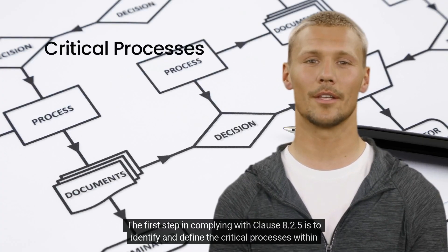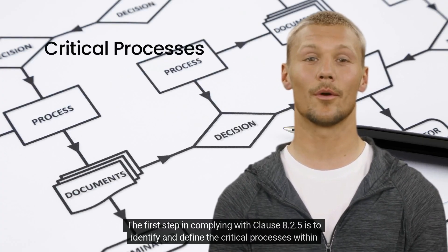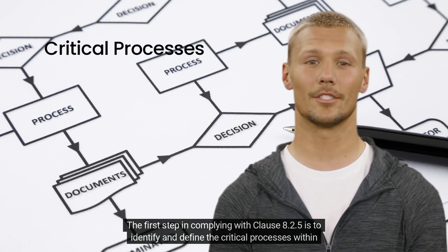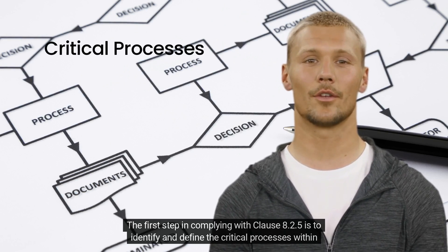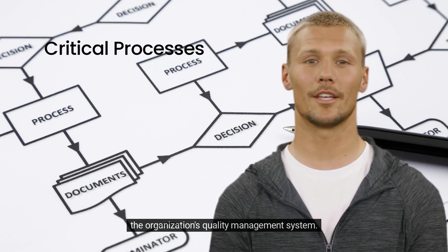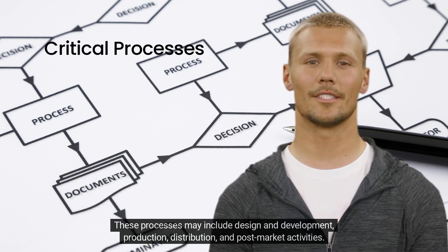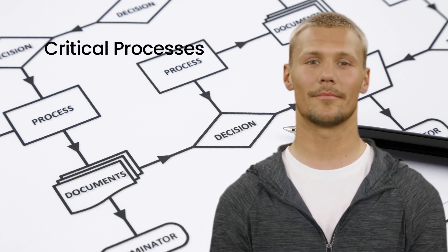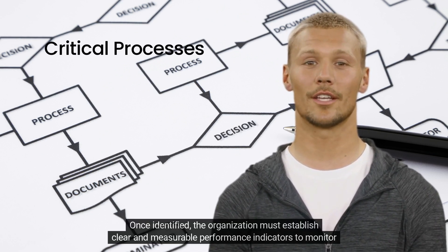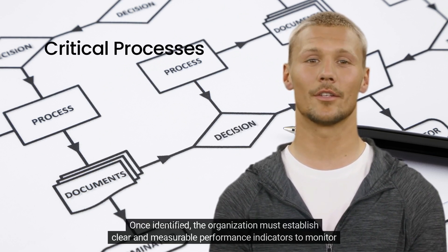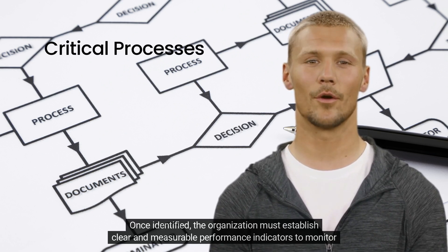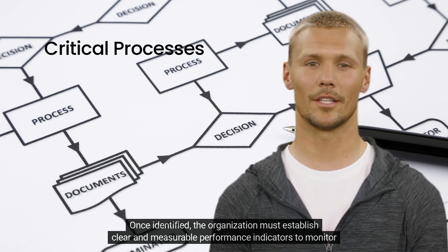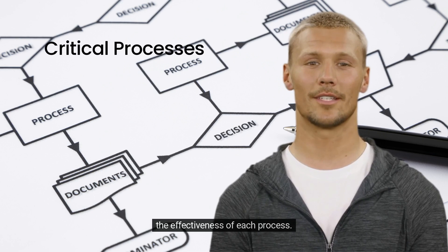The first step in complying with Clause 8.2.5 is to identify and define the critical processes within the organization's quality management system. These processes may include design and development, production, distribution, and post-market activities. Once identified, the organization must establish clear and measurable performance indicators to monitor the effectiveness of each process.